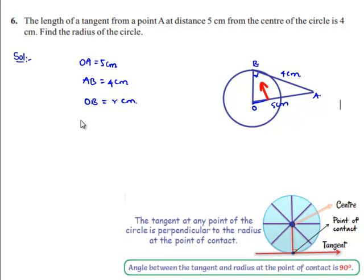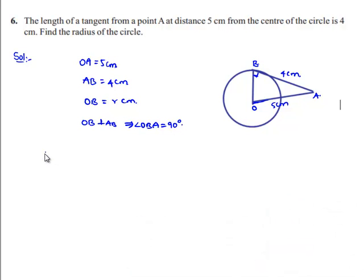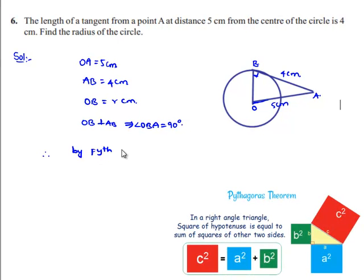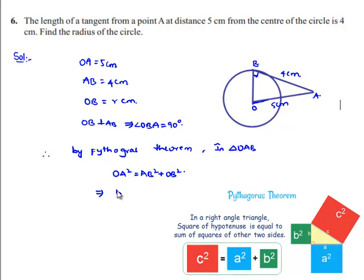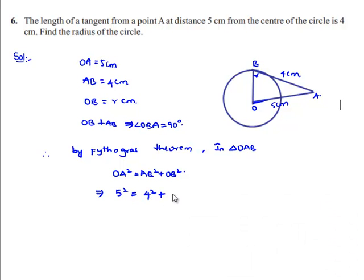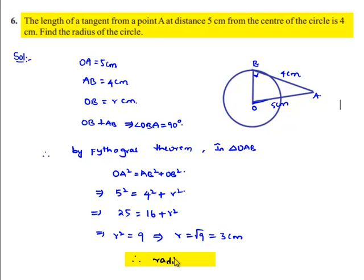We know the tangent is always perpendicular to the radius at the point of contact, so OB ⊥ AB, meaning angle OBA = 90°. By Pythagoras theorem in triangle OAB: OA² = AB² + OB², so 5² = 4² + r², giving 25 = 16 + r², therefore r² = 9, and r = 3 cm. The radius of the circle is 3 cm.